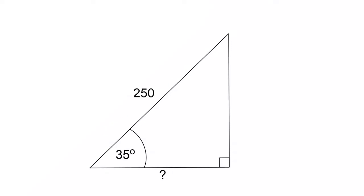So in this example, we're going to have 35 degrees for a designated angle, and we're going to have 250 whatever for our hypotenuse.